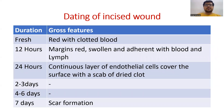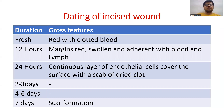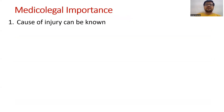Dating of incision — also called age of the wound: Fresh wound is red with clotted blood. At 12 hours, margins are red, swollen, and adherent with blood. At 24 hours, there is a continuous layer of endothelial cells over the surface with a scab and a fibrin clot. At 2–3 days and 4–6 days, gross features show little difference, but microscopically grafting and other changes are visible. At 7 days, scar formation occurs.